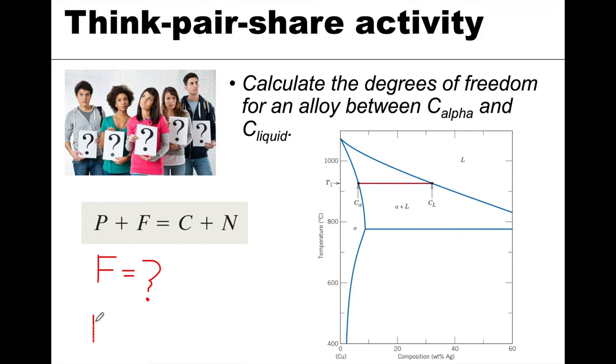Alright, so what about N? Let's actually do it in the reverse order. This term is non-compositional variables. We have temperature, but this is a binary phase diagram and we don't see any mention of pressure, right? So the only non-compositional variable is temperature, and so we have one.